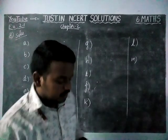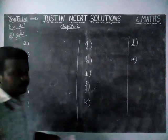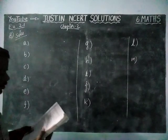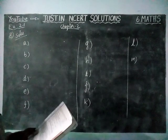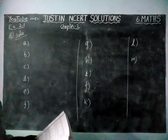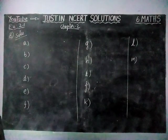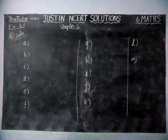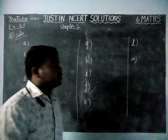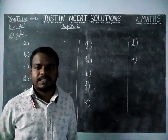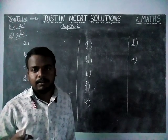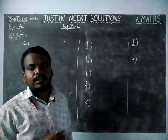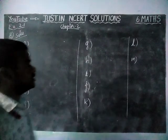The first question: '0 is the smallest natural number.' In natural numbers, the first number is 1. So here, the statement is false.